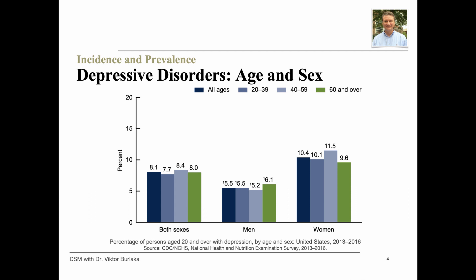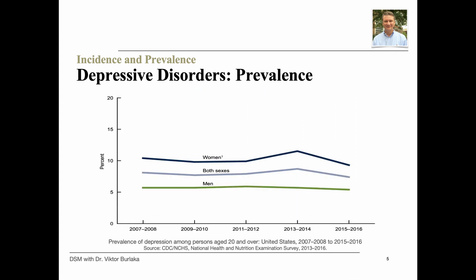Overall, women were almost twice as likely to have depression as men, a pattern observed across each age group. Over a 10-year period from 2007–2008 to 2015–2016, the percentage of adults with depression did not change significantly. Among men, the prevalence was 5.7% in 2007–2008 and 5.4% in 2015–2016. Among women, the prevalence was 10.4% in 2007–2008 and 9.3% in 2015–2016.